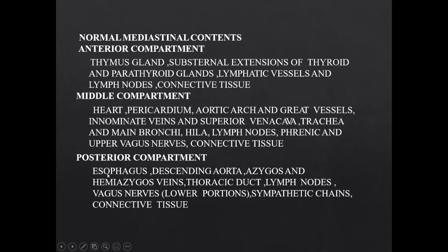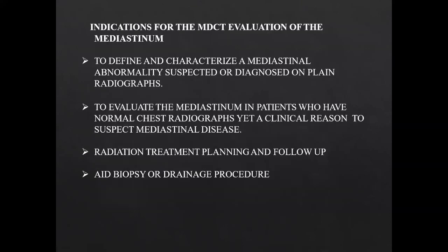The posterior compartment consists of the esophagus, descending aorta, azygos and hemiazygos veins, thoracic duct, lymph nodes, vagus nerves, sympathetic chain, and connective tissue.